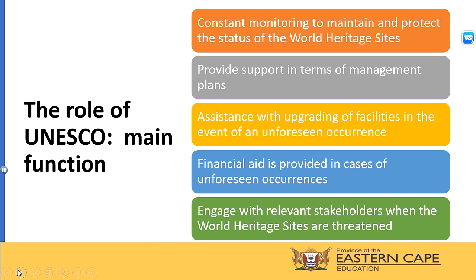Financial aid is provided in the cases of unforeseen occurrences. Again, if a fire breaks out or there is an earthquake at a site, UNESCO does not only provide assistance with upgrading of facilities — they also provide financial aid in the case of unforeseen occurrences. And then UNESCO also engages with relevant stakeholders when World Heritage Sites are in a position of being threatened.